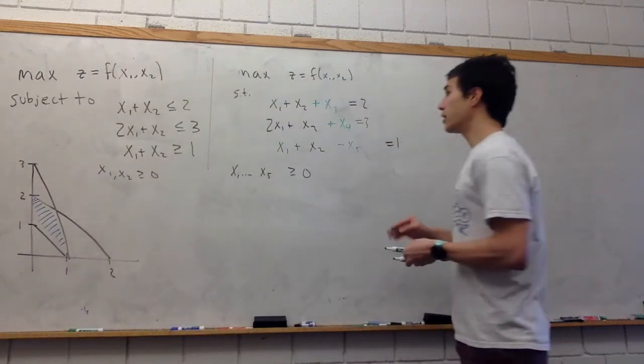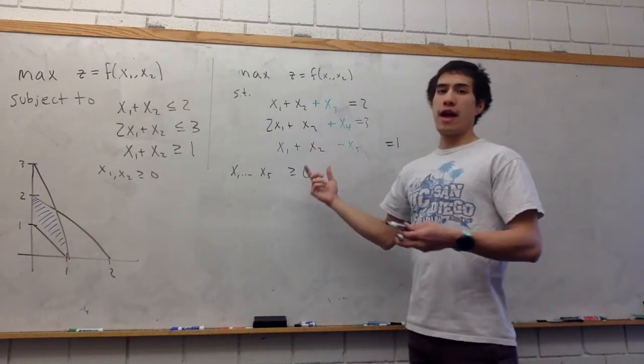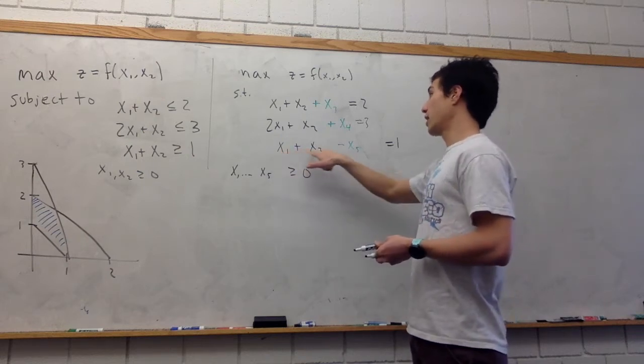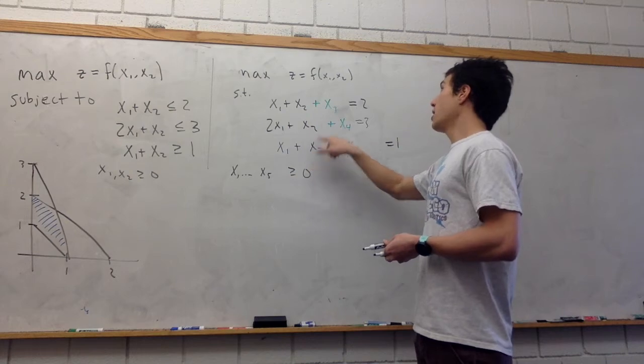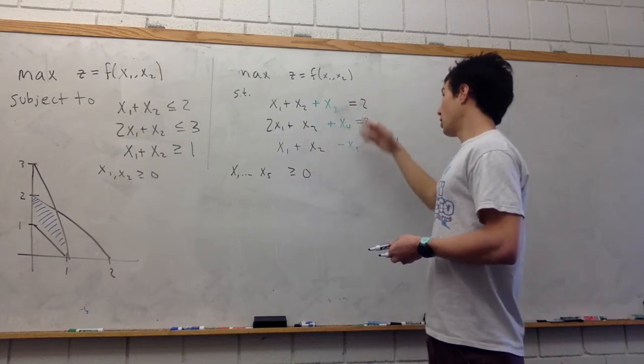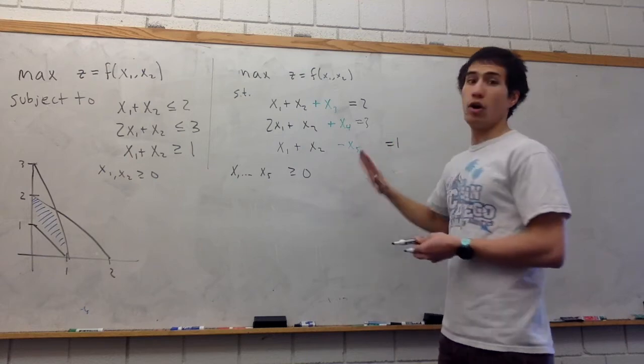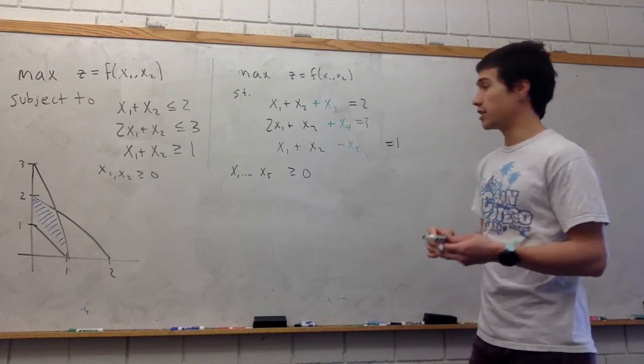And now we're still in trouble because we still don't have an easy point to start with in the feasible region. Still, if we set x1 and x2 equal to 0, then x3 and x4 are solved for, but then x5 has to be negative. And this is not good. We want all of our variables to be non-negative all of the time.